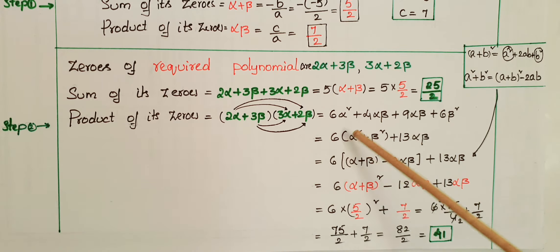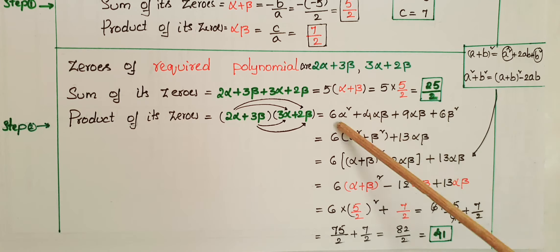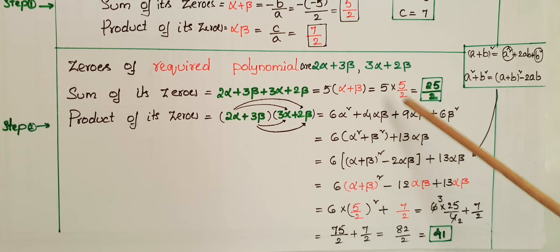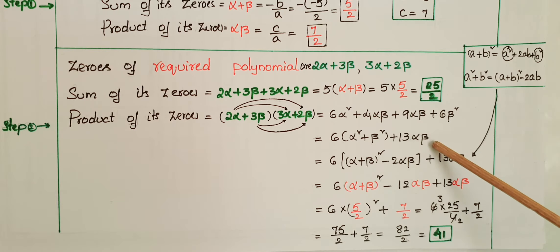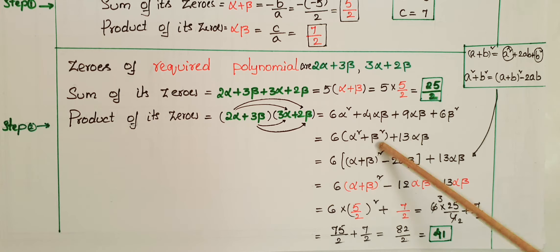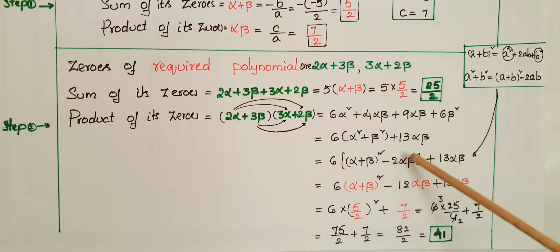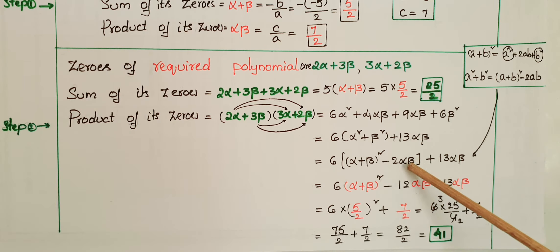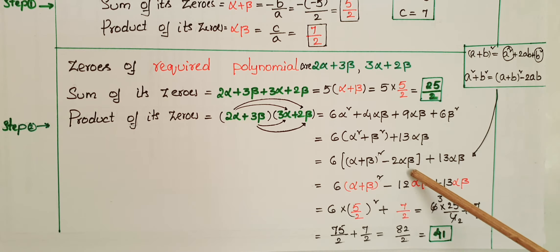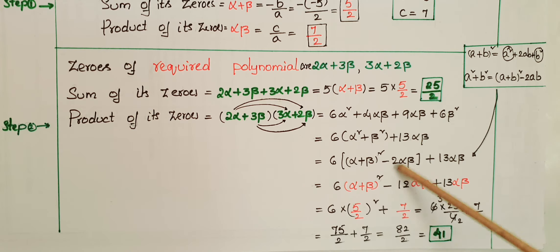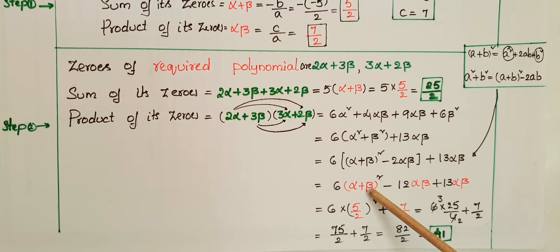Taking 6 as common from the first and last terms: 6(α²+β²) + 13αβ. Since α²+β² = (α+β)² - 2αβ, we write this as 6[(α+β)² - 2αβ] + 13αβ = 6(α+β)² - 12αβ + 13αβ = 6(α+β)² + αβ. Substituting α+β = 5/2 and αβ = 7/2: 6×(5/2)² + 7/2.